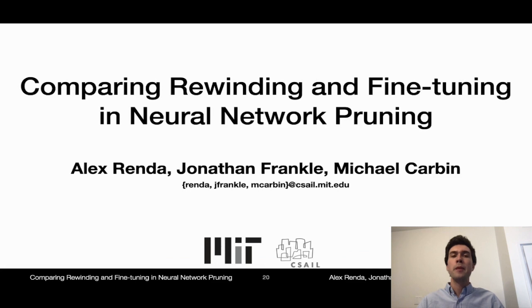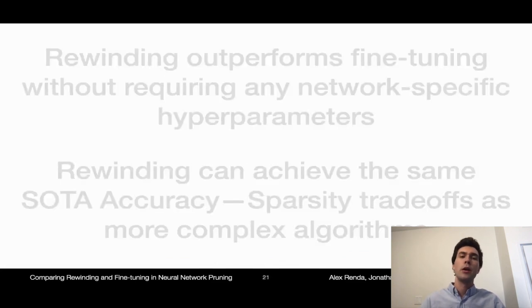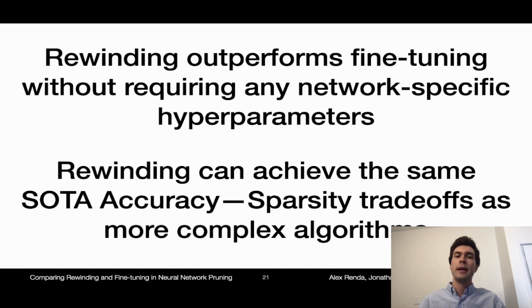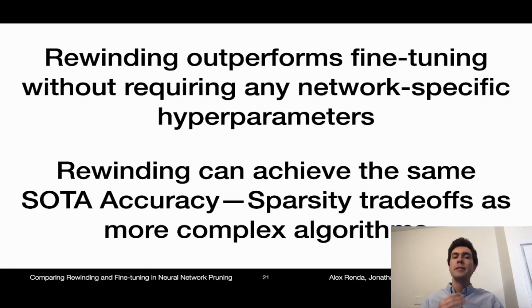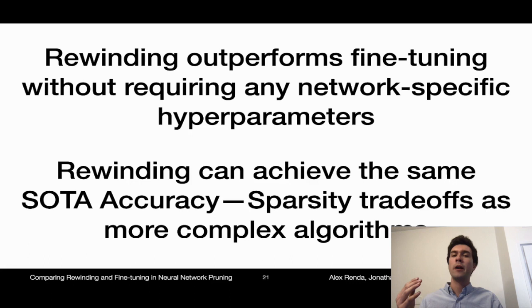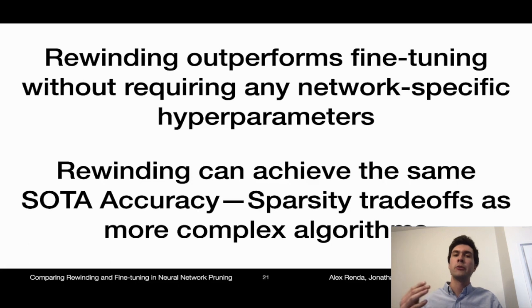In this paper, we compare rewinding and fine-tuning in neural network pruning. We find that both rewinding techniques outperform fine-tuning without requiring any network-specific hyperparameters. Our results go a little bit beyond that: we find that rewinding can actually achieve the same state-of-the-art accuracy versus sparsity trade-offs as much more complex pruning algorithms, such as ones that require either significant manual hyperparameter tuning or reinforcement learning to pick pruning heuristics or hyperparameters.